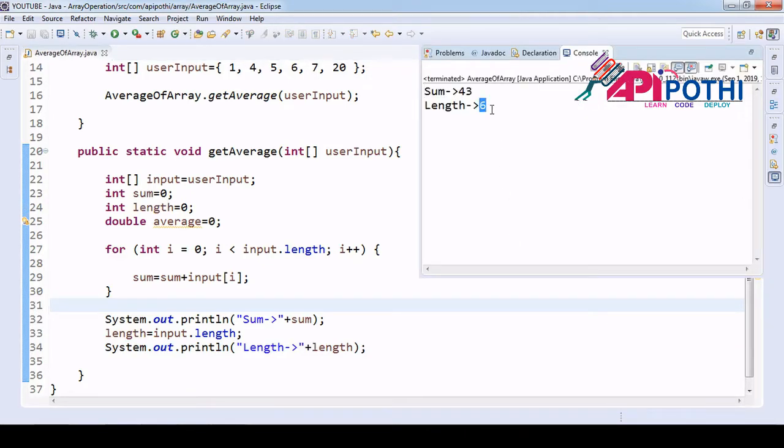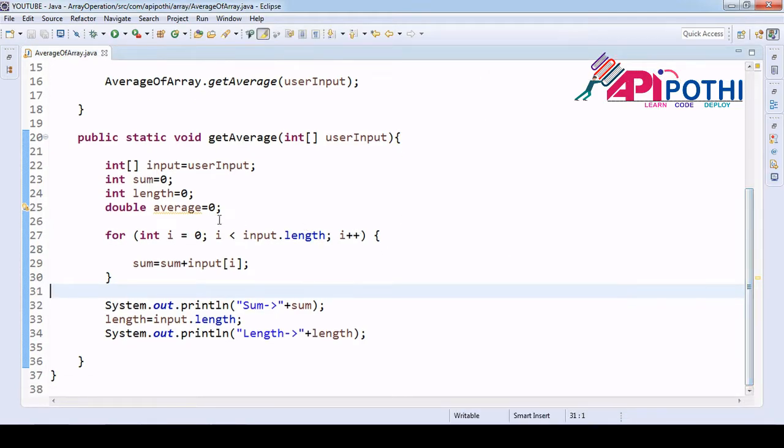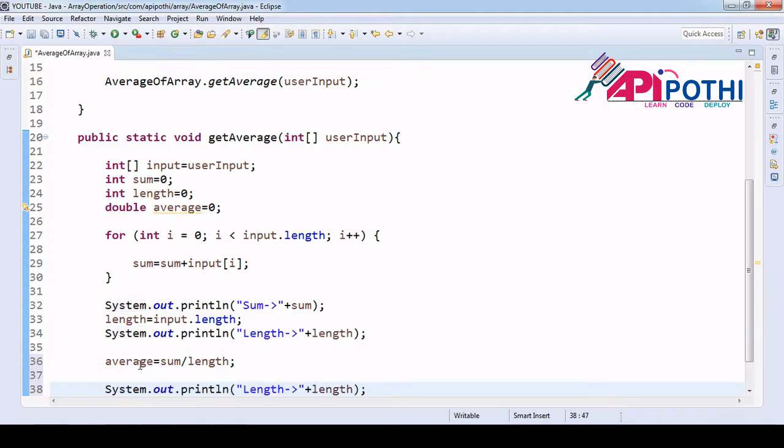Your length is getting as six, that is also perfectly fine. Now the average formula is: average equals sum divided by your length. Let's print the average also for debugging purposes. Later we will delete it.